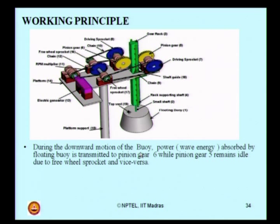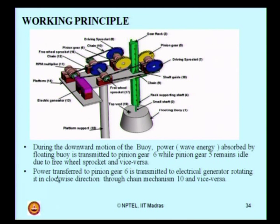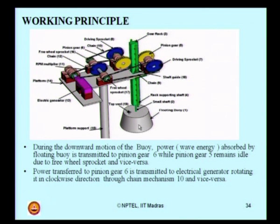During the downward movement of the buoy, the power — the wave energy absorbed by the buoy — is transmitted to pinion gear 6, while pinion gear 5 remains idle. That is a mechanical design. This power transferred to pinion gear 6 is further transmitted to the electric generator by this rotary mechanism, which will make the generator shaft rotate in a clockwise direction through chain mechanism number 10. So the heave motion — that is, the up and down motion of the buoy — is converted to electric power generation in the generator shaft. That is the working principle of this mechanical wave energy converter.